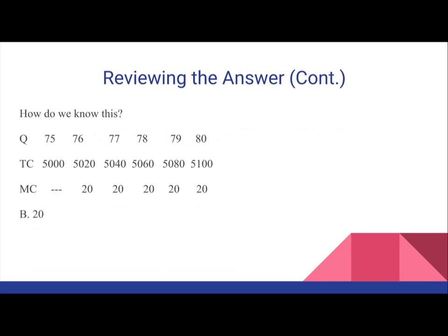So, quantity 75, 76, 77, 78, 79, 80. And now, total cost 5,000 to 5,100. Now, keep in mind, the average total cost goes up by 20 each time the unit increases by 1. Here, it's going to be 5,020, 5,040, 5,060, 5,080, 5,100. So, the marginal cost for each one is 20.